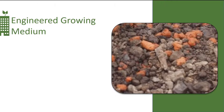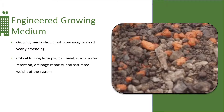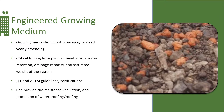Growing media blends have been improved tremendously in the last 15 years. They are a highly engineered soil unique to the industry. Growing media is designed to not blow away or need yearly amending. It is critical to long-term plant establishment and survival, short stormwater retention, drainage capacity, and saturated weight of the system. Testing agencies use the FLL and ASTM guidelines to certify or accept the growing media blends. Because there is usually moisture within the growing media, it can provide fire resistance, and it also adds to the insulation factors and protecting the roofing system.